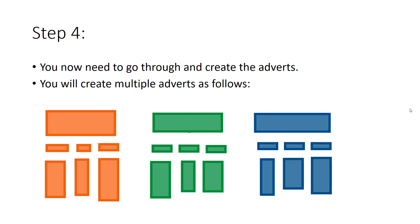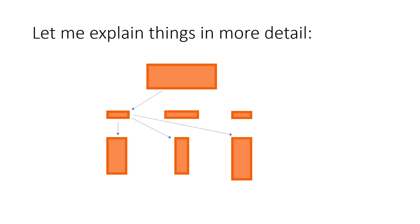Now you've got your three images, three headlines and three pieces of text, you're going to create multiple adverts as follows. Using the first image, you're going to put it with the first headline and the first piece of text, then the same image and same headline with the mid-length piece of text, and finally that first image with the first headline and the long piece of text.